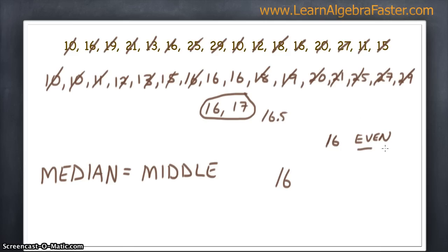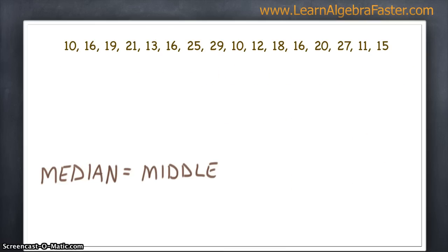So whenever you have an even number of data points in the set, you have a calculation potentially. In this particular case, we had the same number in the middle, so it is the median. So for this set, 16 is the median, but normally we'll have to do some sort of calculation. Let's move on to another example.